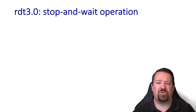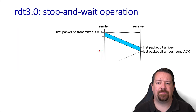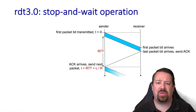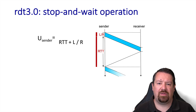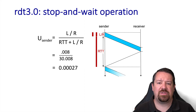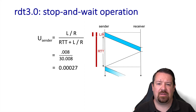Now let's draw out our stop-and-wait operation on a time sequence diagram. We see that the sender spends a small amount of time transmitting the packet, and then a large amount of time waiting for it to propagate to the receiver and waiting for the acknowledgement to propagate back. Our utilization can be calculated as the transmission delay divided by the transmission delay plus the round trip time. Plugging in the numbers, we have 8 microseconds over approximately 30 milliseconds.